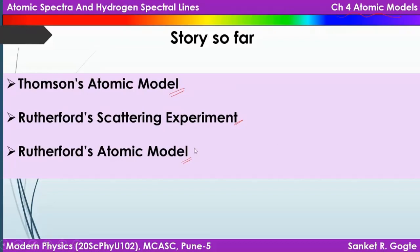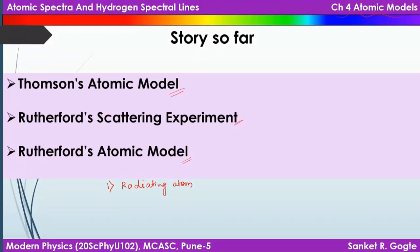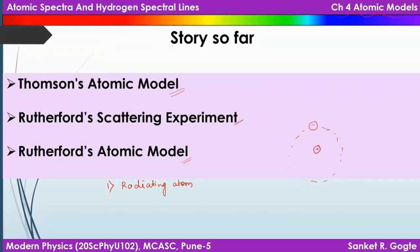Rutherford's model was good enough to explain the scattering formula we saw in the previous lecture, but it wasn't without drawbacks. There were two major drawbacks. The first one was the radiating atom problem. According to Rutherford's atomic model, we have a nucleus which contains almost all the mass and all the positive charge, and the electron revolves in a circular orbit about that nucleus, performing uniform circular motion — speed is constant but velocity is a vector, so its direction continuously changes.